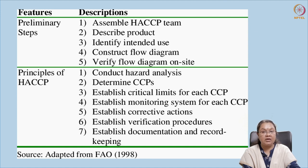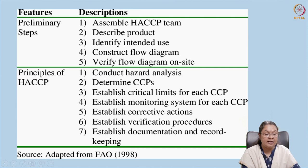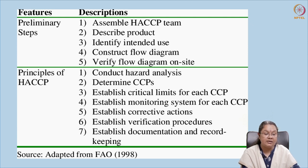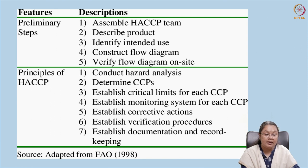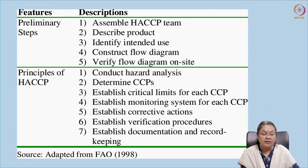Altogether we have 12 steps and 7 principles. First we have to conduct a hazard analysis — understand the different hazards, whether biological, physical, or chemical. We have to determine the CCPs, identify the critical control points, set a critical limit, and then monitor it regularly to see that it is not deviating. If it is deviating we take corrective actions, verify, and record everything. There will be documentation and record keeping for all activities done in the plant.